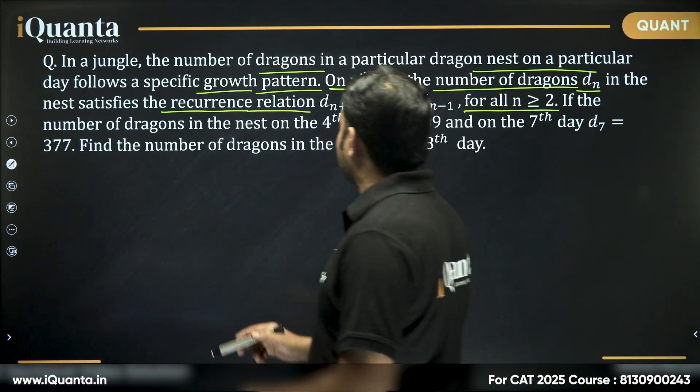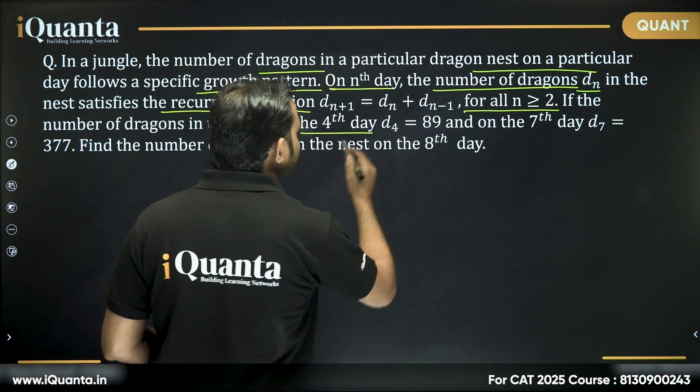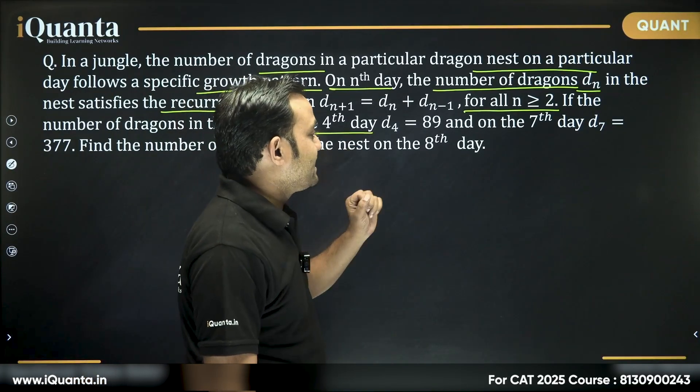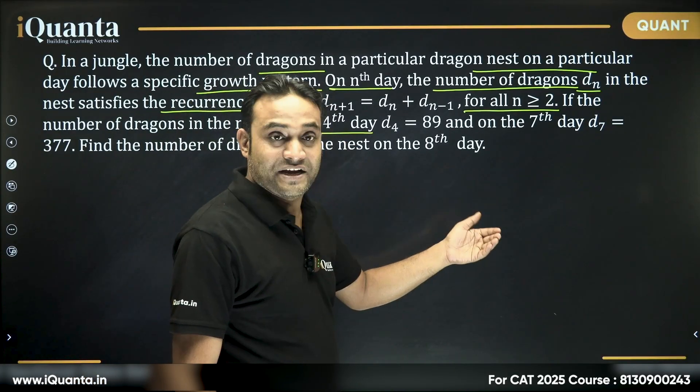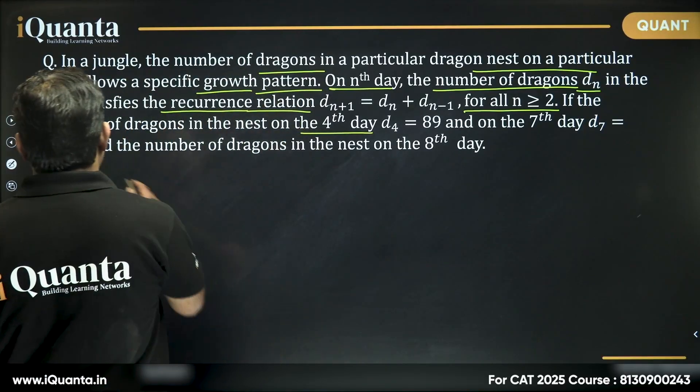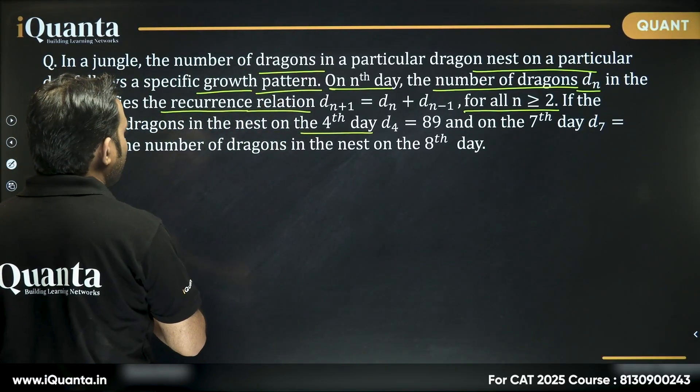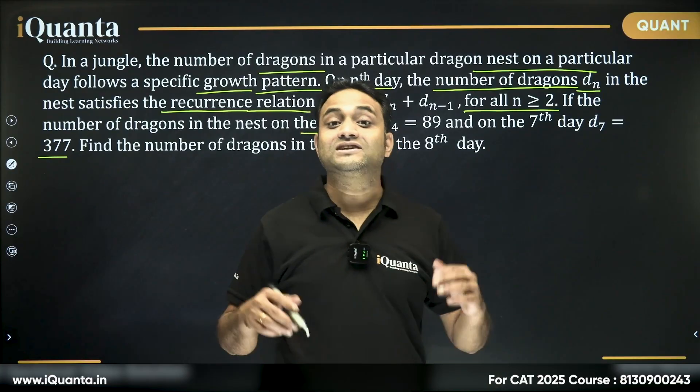if the number of dragons in the nest on the fourth day, which is d4, equals 89, and on the seventh day, which is d7, equals 377, find the number of dragons in the nest on the eighth day.